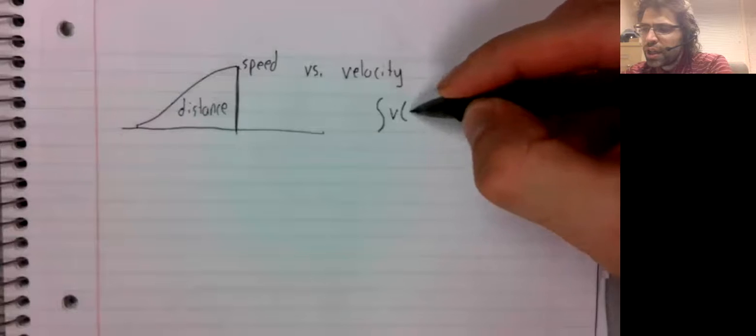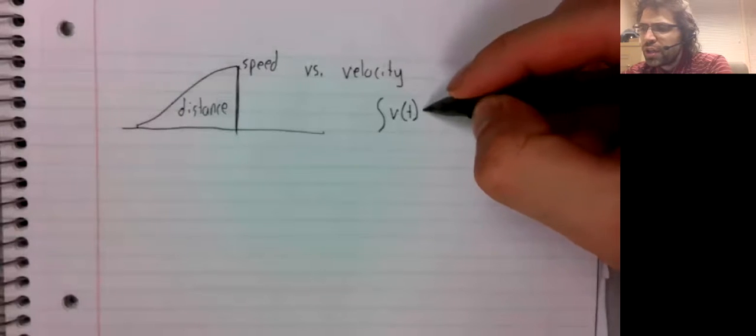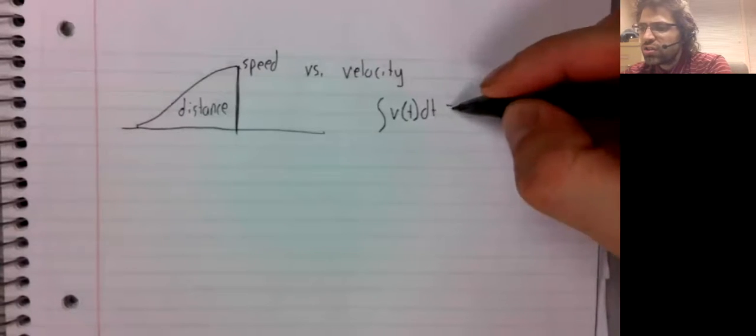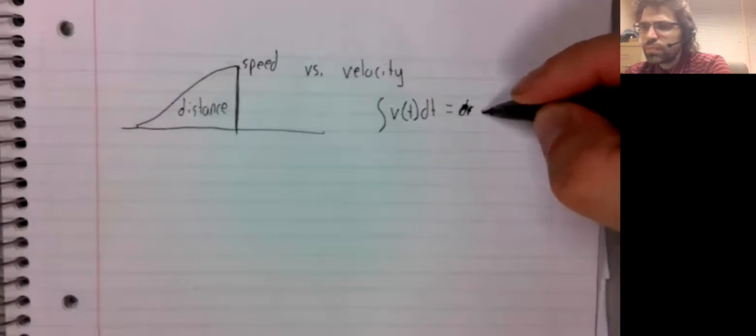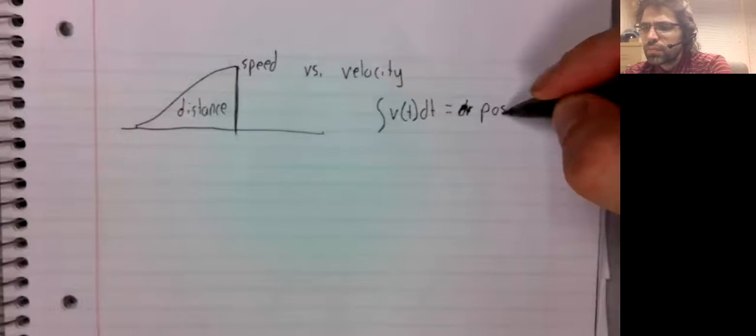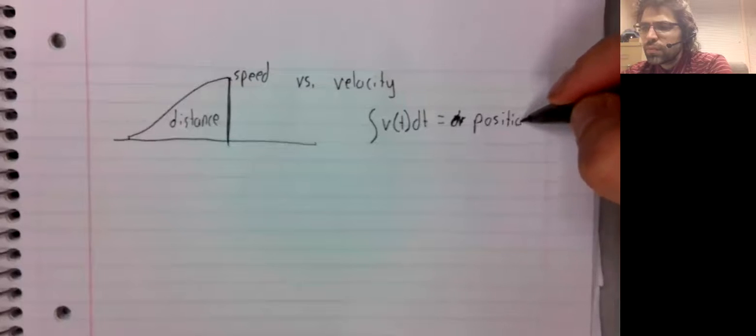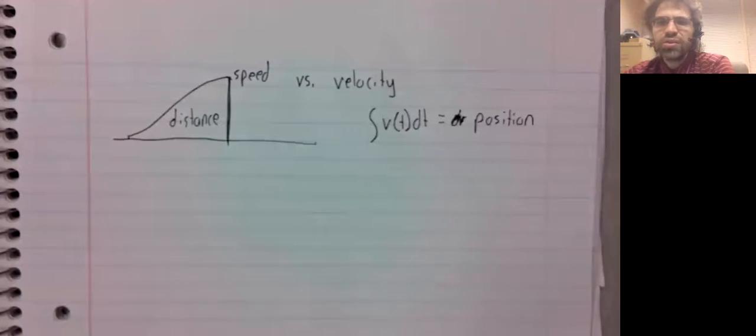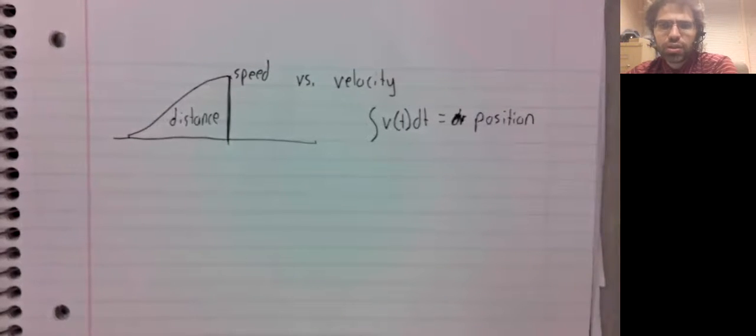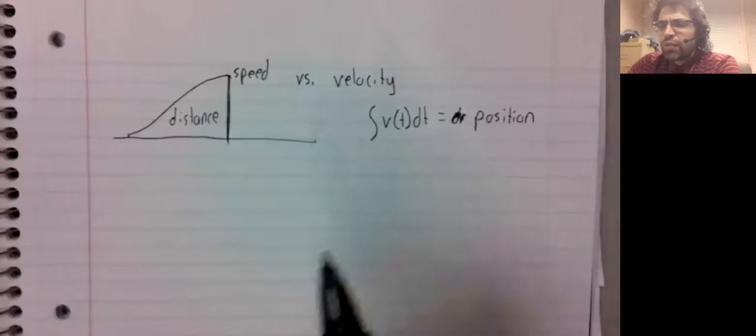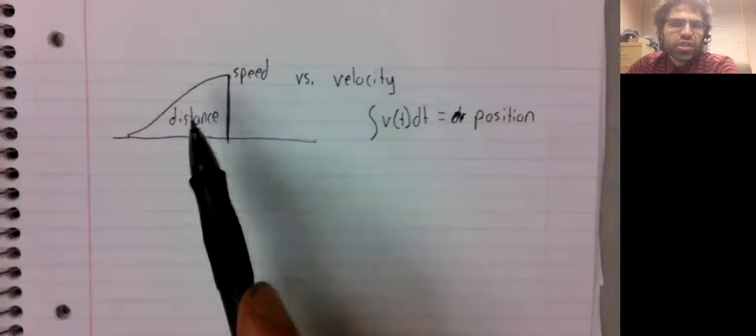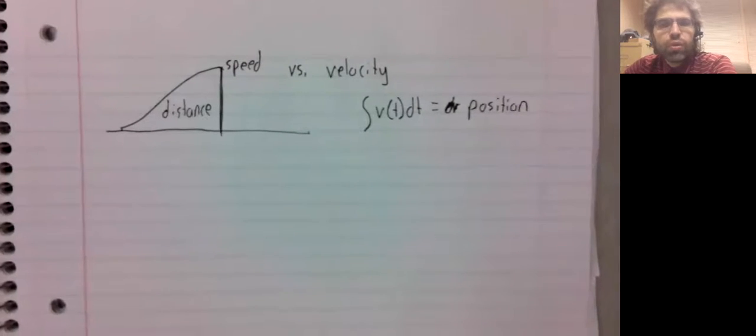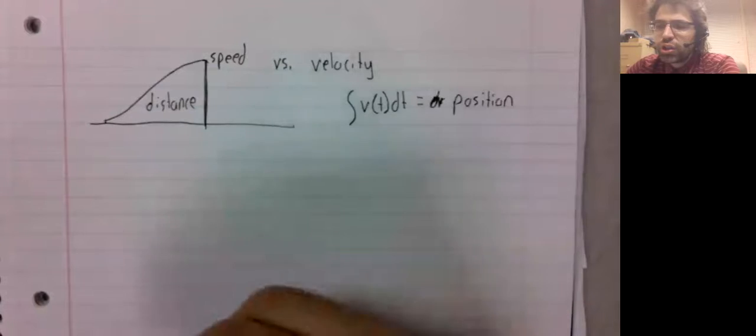And the anti-derivative of a velocity function is the position's function, and of course, the object's position and the distance that it travels are closely related.